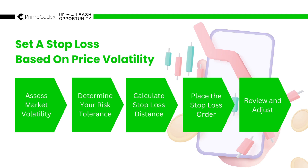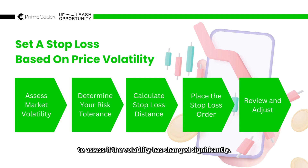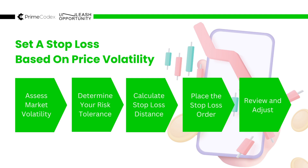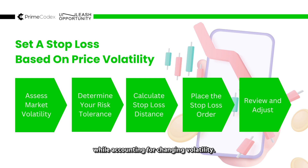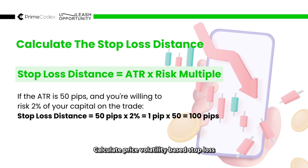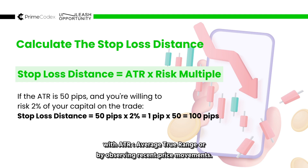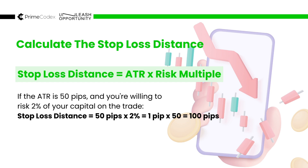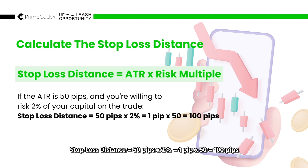Regularly review market conditions and your trade to assess whether volatility has changed significantly. If volatility increases or decreases substantially, consider adjusting your stop loss accordingly. You can also consider trailing your stop loss as the trade moves in your favor to lock in profits while accounting for changing volatility. The formula is: stop loss distance = ATR multiplied by your risk multiple, where ATR is the Average True Range measuring recent price movements. For instance, if the ATR is 50 pips and you are willing to risk 2% of your capital, the stop loss distance is 50 pips multiplied by 2, which equals 100 pips.